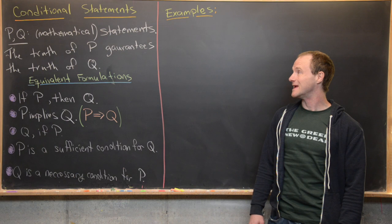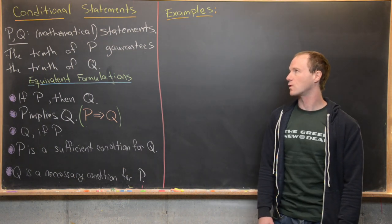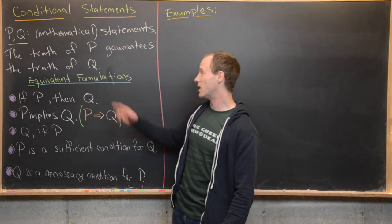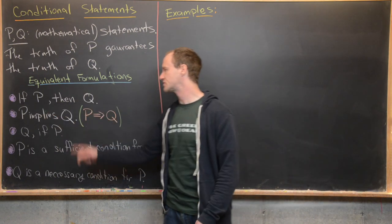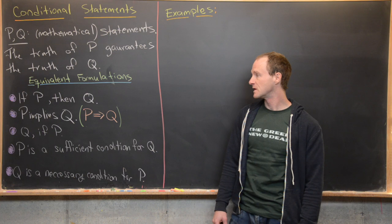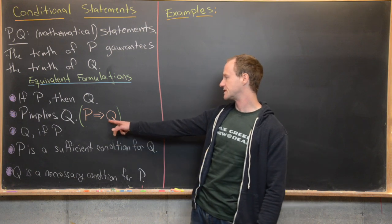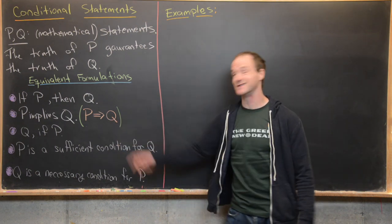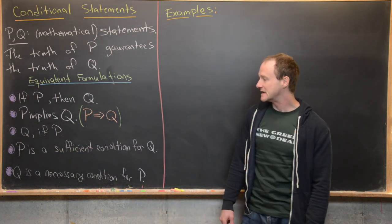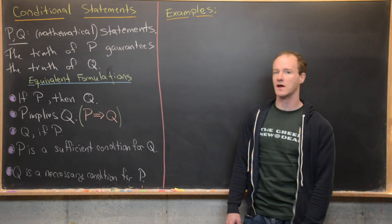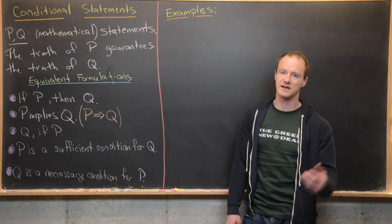The truth of P guarantees the truth of Q. There are a bunch of equivalent formulations of that, and maybe the most common is 'if P then Q' — this says if we know P is true, then Q also must be true. Other formulations include: P implies Q, sometimes written with a double arrow; Q if P; P is a sufficient condition for Q; and Q is a necessary condition for P.